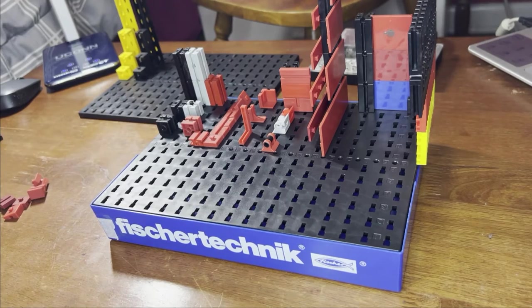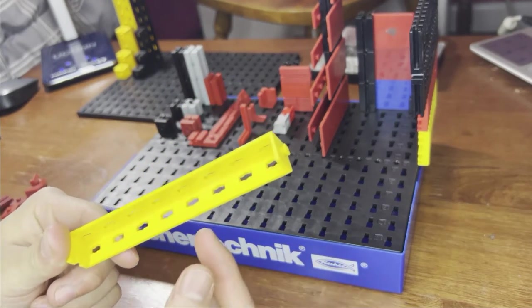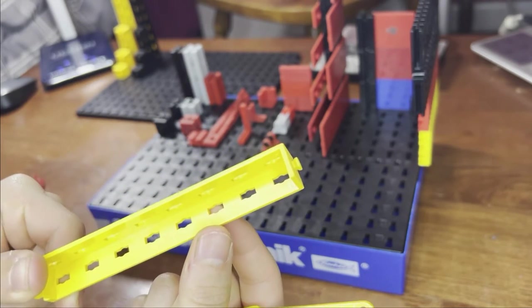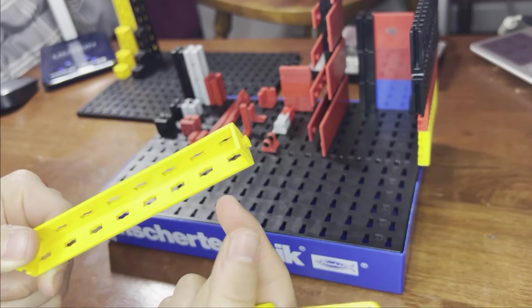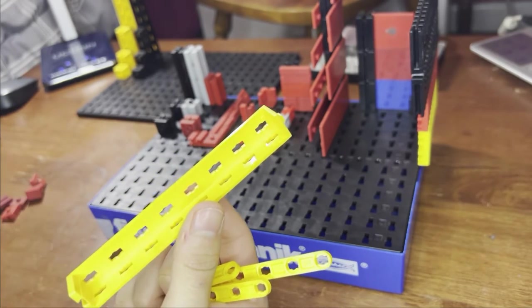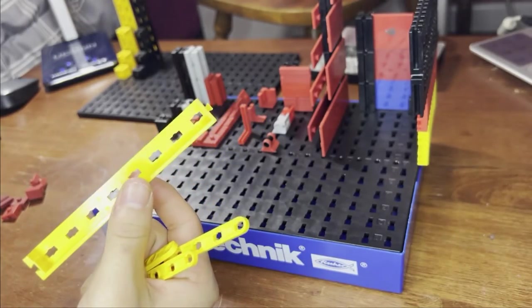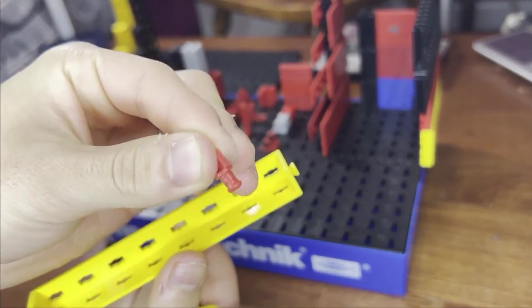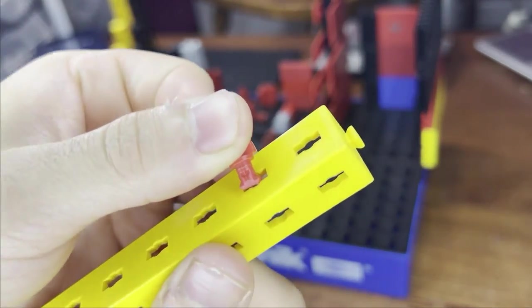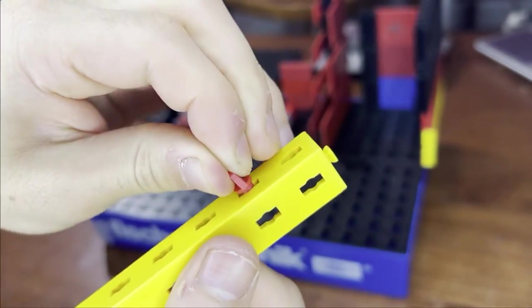Something you'll notice about these beams is that they have weird connections on the side here. And that's because they actually fix to other similar elements with similar holes, using a different type of connection. They use rivets, which insert through the hole, the thin way, and then turn around to secure it.